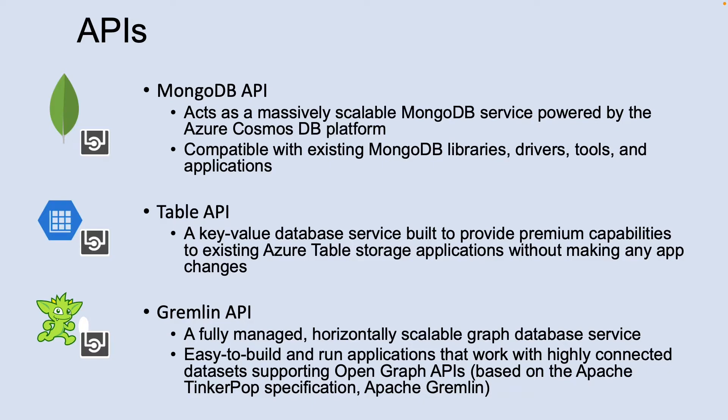Azure Cosmos DB can be accessed using five different APIs. The underlying data structure in Azure Cosmos DB is a data model based on atom record sequence, which enables Azure Cosmos DB to support multiple data models. Because of the flexible nature of the atom record sequences, Azure Cosmos DB will be able to support many more models and APIs over time.